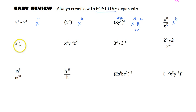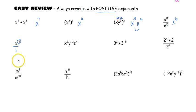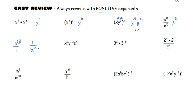x to the negative second — we have a negative exponent, so we've got to get rid of the negative. To get rid of the negative, we do the reciprocal. Right now that would be on top of the fraction, so to make it positive two, we move it to the bottom of the fraction, and we have 1 over x squared.